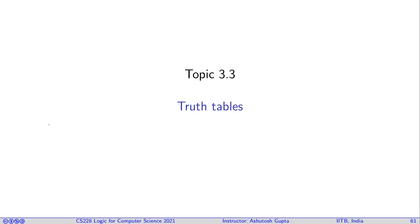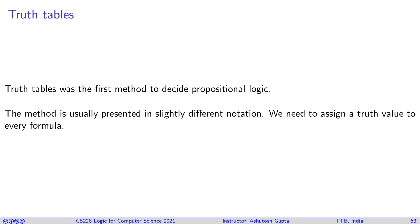If truth table says that something is SAT, then it's SAT, otherwise it's not. So let's establish what truth tables are and how we handle them. The method is usually presented in slightly different notation. We need to assign a truth value to every formula. So far we have been assigning truth value to the variables using the satisfaction relation. We can extend this assignment to each formula.